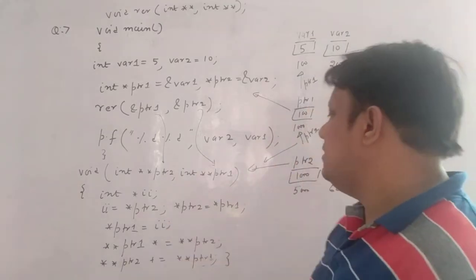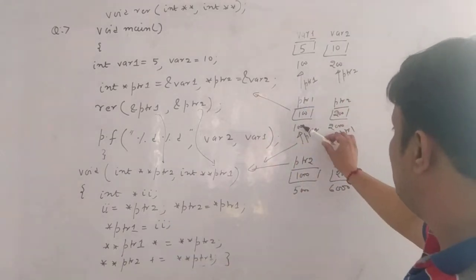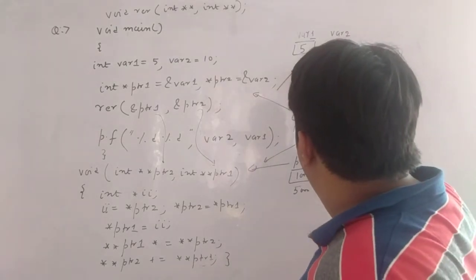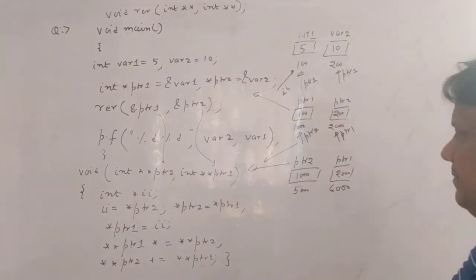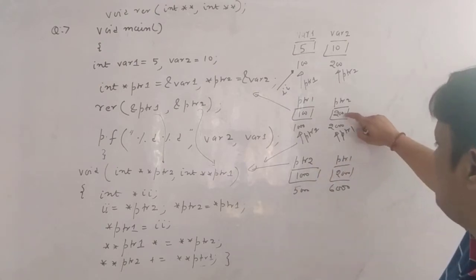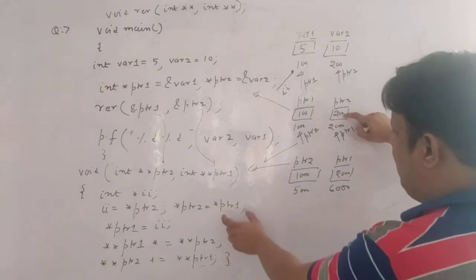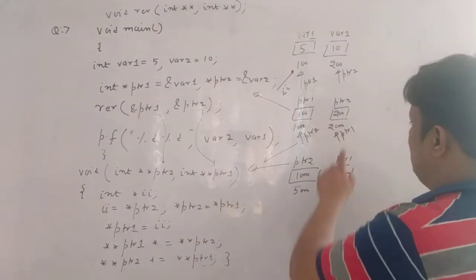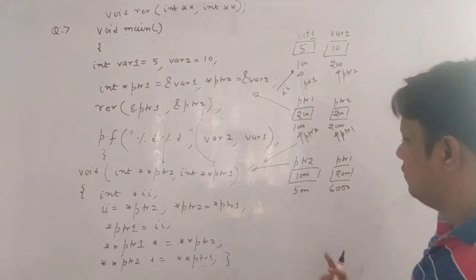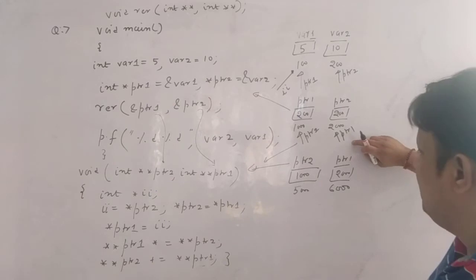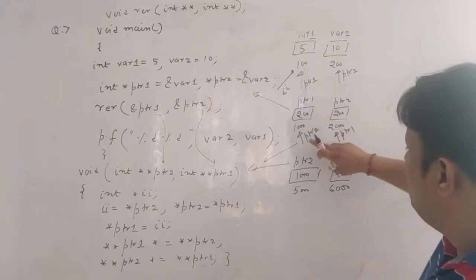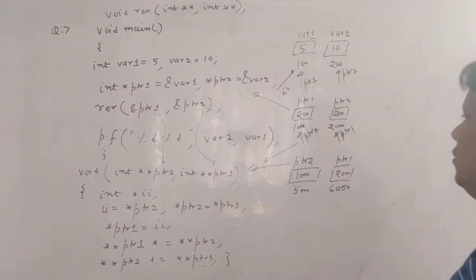Now, *ptr2 is equal to ii. ptr2 is pointing at 1000, and 1000 star is 100, so your ii is pointing at this 100. Now, then what we are doing: *ptr1 — *ptr1 is 200 — that 200 we are assigning to *ptr2, so this changes to 200.